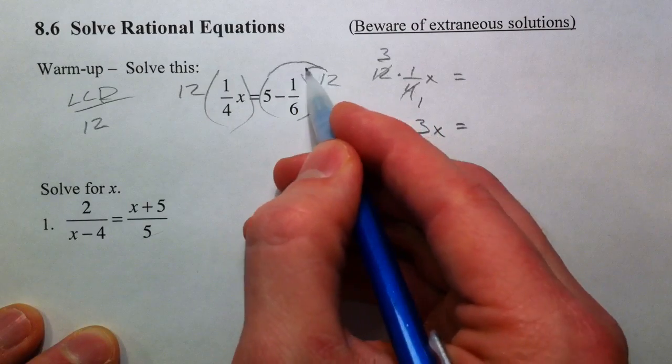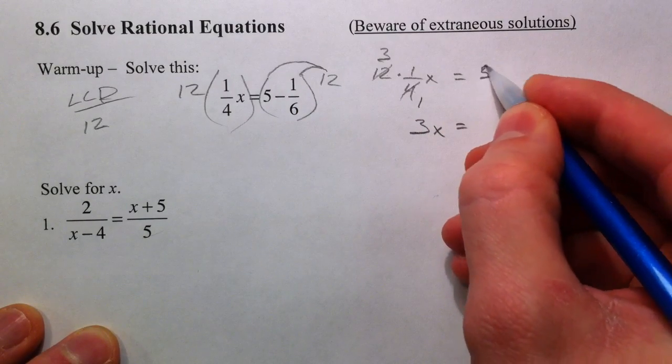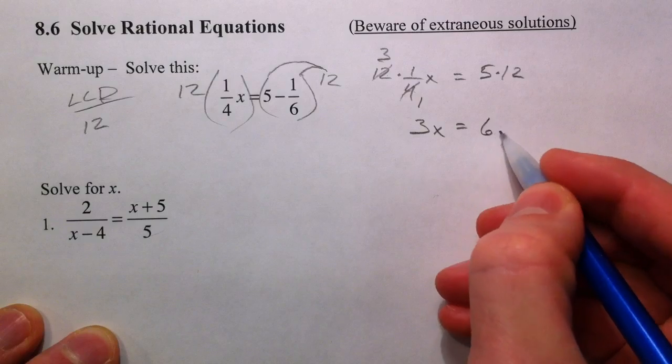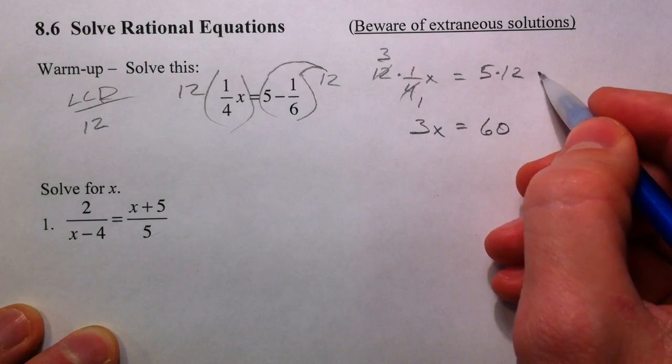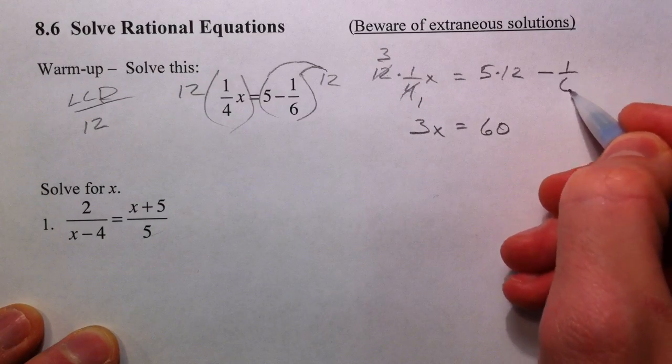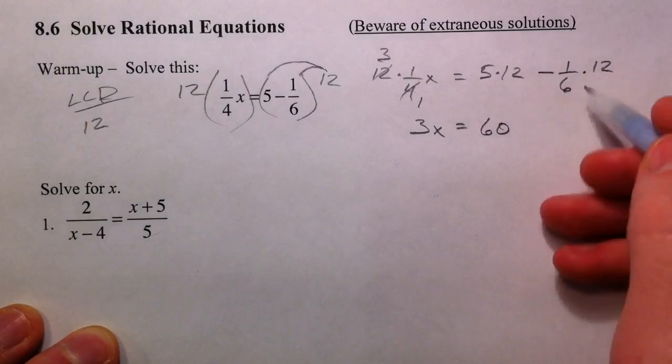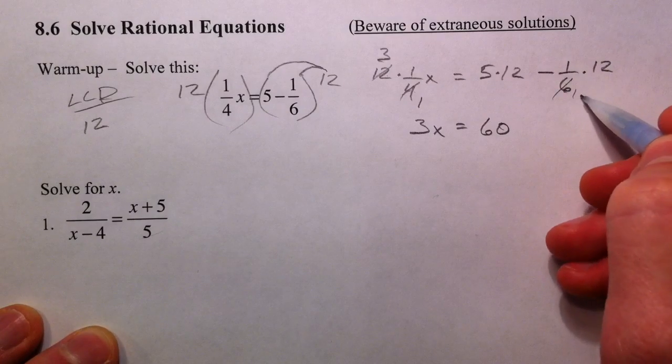Didn't have a fraction to begin with, but then one-sixth times 12, the 6 goes into itself once and 6 goes into 12 twice, 1 times 2 is 2. 60 minus 2 is 58.